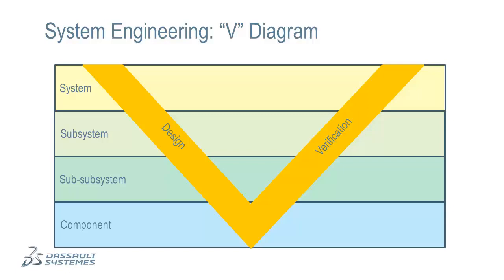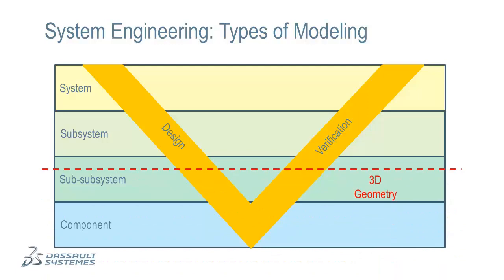System engineering is not specific to modeling, but it is useful to understand how different types of modeling fit into the system engineering process. For many types of analysis at the system level, 3D surface geometry is not yet used or even available. But inevitably, as designs become more detailed, 3D surface data must be incorporated into the models. When and where this 3D information is required varies, but we can be fairly certain it will play a role by the time we get to the component level.